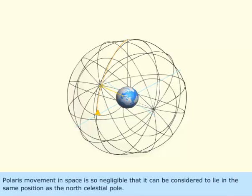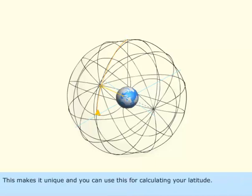Polaris' movement in space is so negligible that you can consider it to lie in the same position as the North Pole in the celestial sphere. This makes it unique, and you can use this for calculating your position.